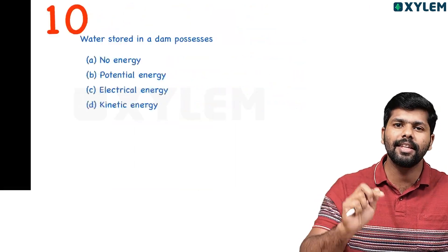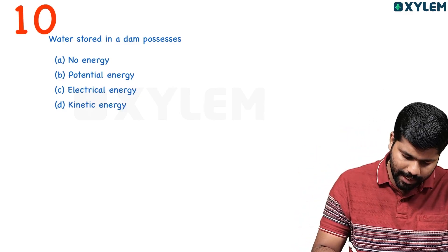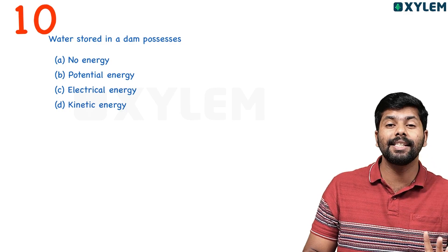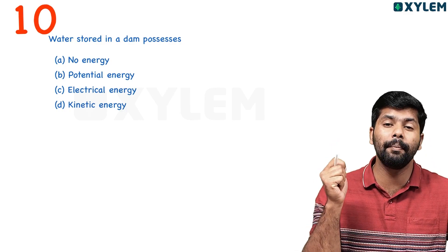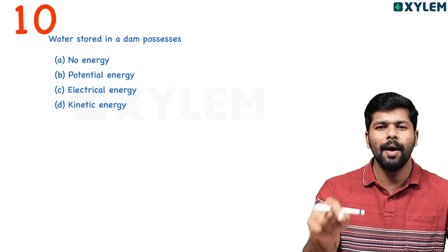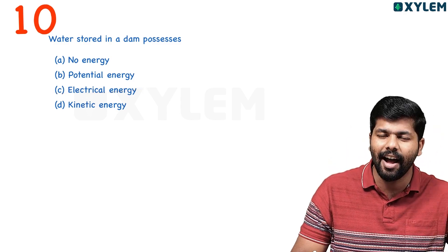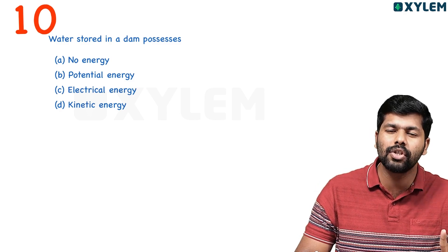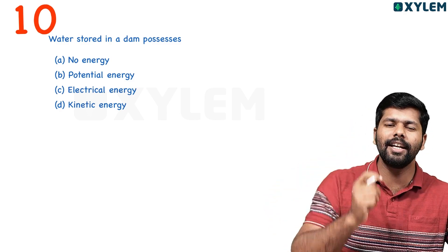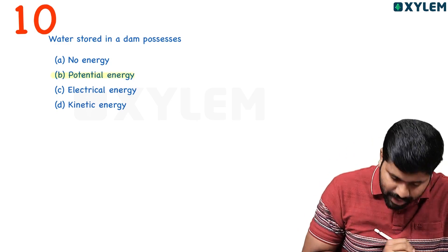The first question is the 10th MCQ. It is a very simple question — water stored in a dam. We have to store water in dams for the production of electricity. The energy stored by virtue of its position — what is that energy? That is potential energy.